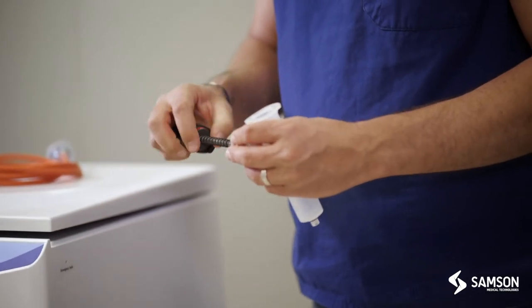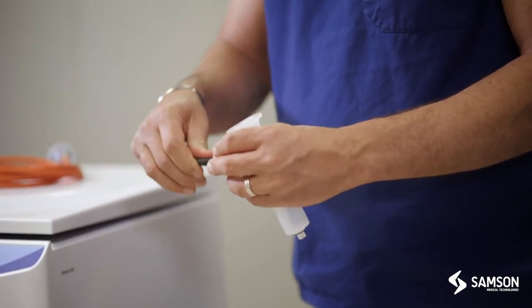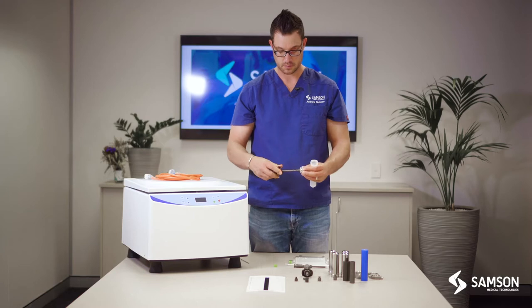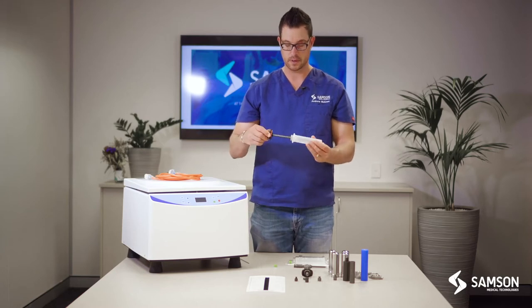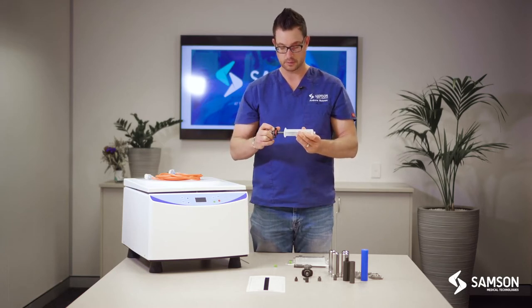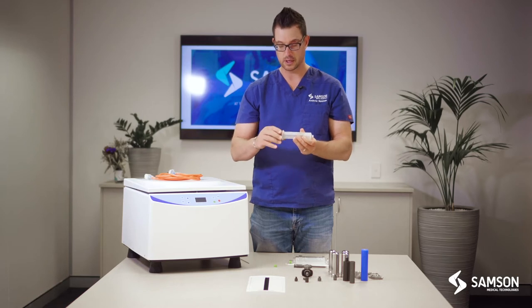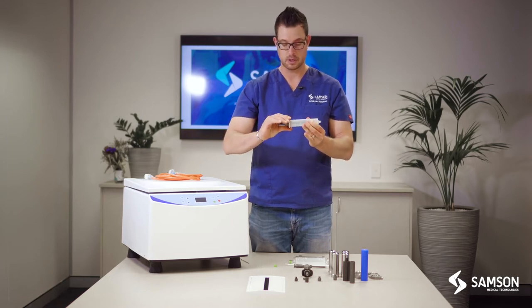That is then connected to the back of the piston and then it is placed in the syringe. It's pushed all the way down and then it is twisted and locked.